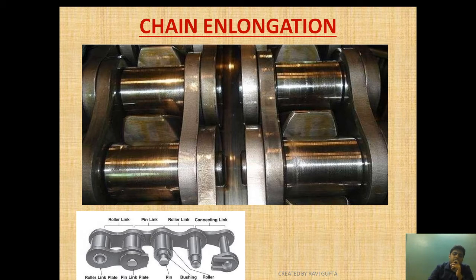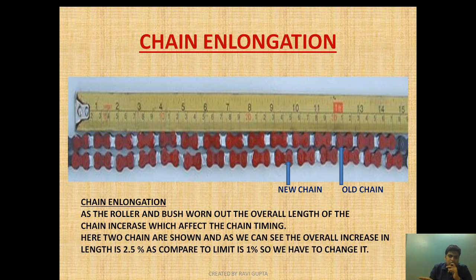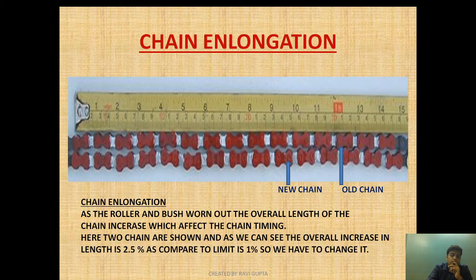Over time the roller and bush wear out, their thickness decreases, and therefore the distance between the centerlines of the pins — the pitch — changes, causing chain elongation. In a marine diesel engine, the limit is one percent. If the overall elongation of a chain is more than one percent of the total chain length, we have to change the entire chain drive. In this diagram, the total elongation is around 2.5 percent, so it must be changed.